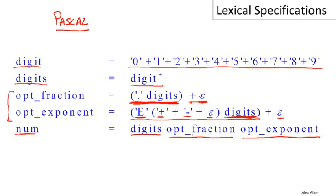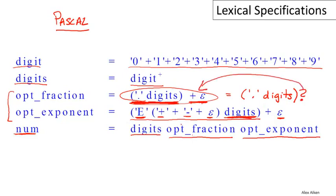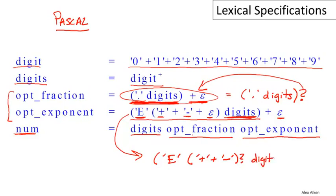This idiom of 'plus epsilon' to indicate something is optional is extremely common, so there's another shorthand: a question mark after a regular expression means exactly that — take the regular expression and union it with epsilon. So we can write the fractional component followed by a question mark, meaning it might be absent. For the exponent, we have 'E' followed by a sign — either plus or minus — with a question mark (optional), followed by a non-empty string of digits, with a question mark on the whole exponent making it optional. This is an alternative, more compact way to write the expression.